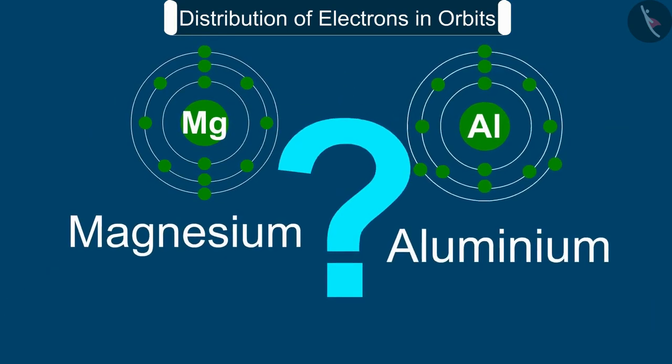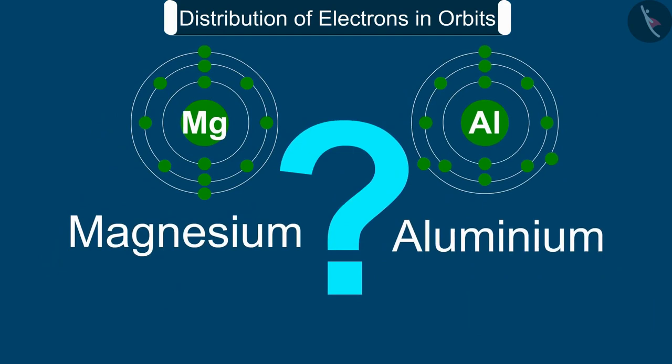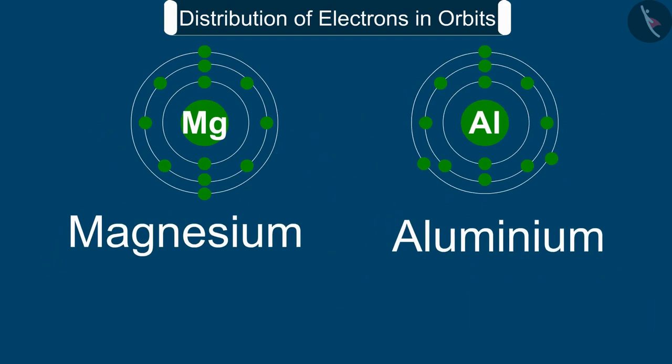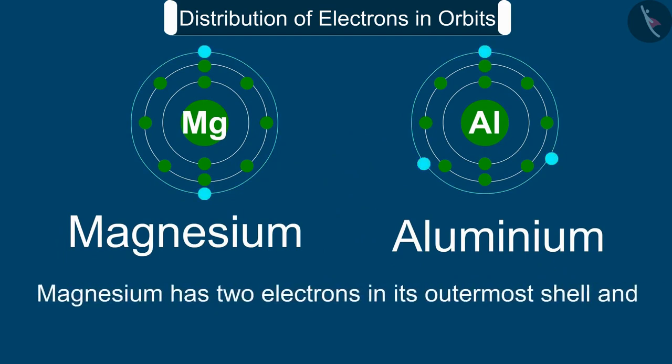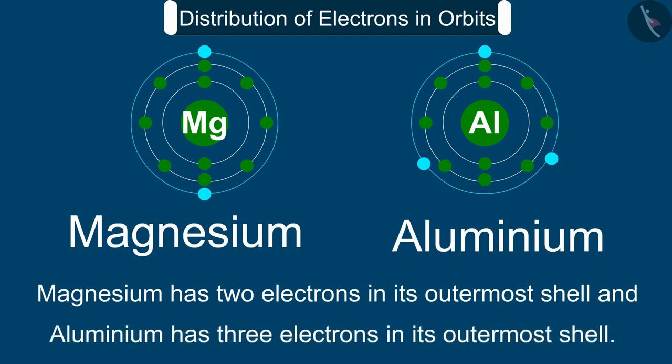Can you tell what is the valency of magnesium and aluminium? Absolutely correct! It is two and three respectively, because magnesium has two electrons in its outermost shell and aluminium has three electrons in its outermost shell.